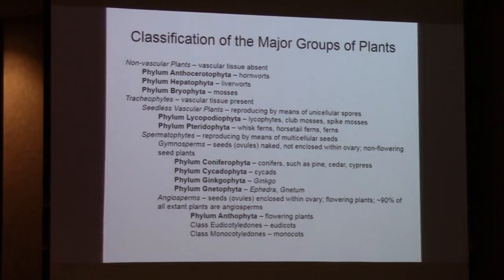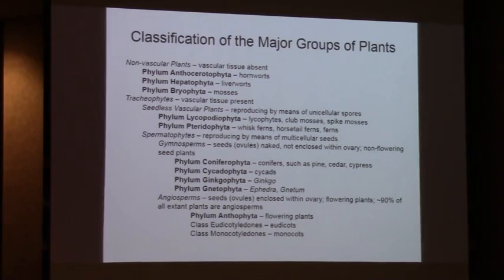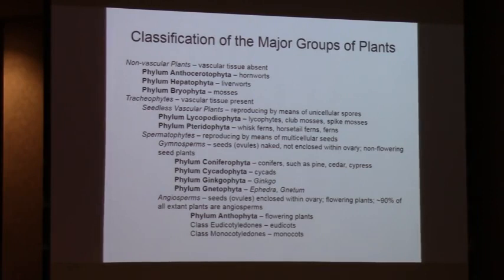There are three major groups of non-vascular plants: the hornworts, the liverworts, and the mosses. And then we've got the tracheophytes - those with vascular tissues - which are the plants most of us are best acquainted with. These are the ones most important to sustaining human life: food, fiber, and the like. We've got two categories: the seedless vascular plants, which reproduce and disperse by means of microscopic unicellular spores, and the spermatophytes, which reproduce and disperse by means of multicellular seeds.